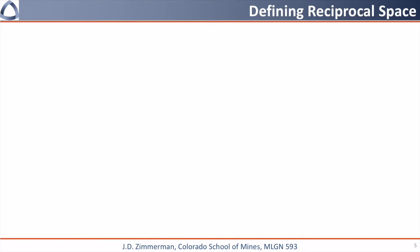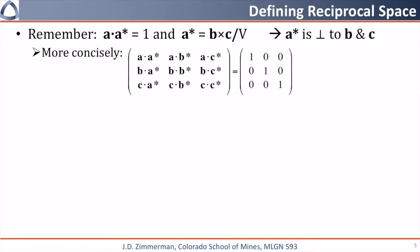I would like to define reciprocal space a little bit more formally. Remember that a star a equals one, and that a star is perpendicular to both b and c, so we can write this much more concisely using this matrix. Here, a dot a star equals one, and a dot b star equals zero.